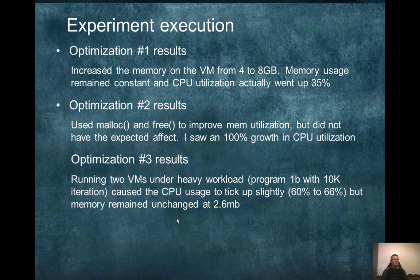For running 2 VMs, I ran workload 1B and increased the iterations up to 10,000. That caused the CPU to only tick up slightly. When I ran 1 VM, it was 60% CPU, and with 2 VMs it only went up to 66%. So adding the additional VM didn't really cause much more CPU utilization to occur.